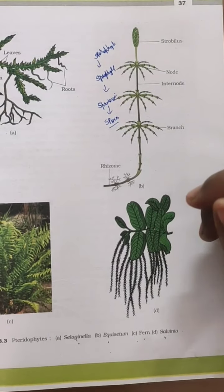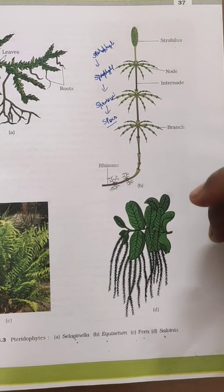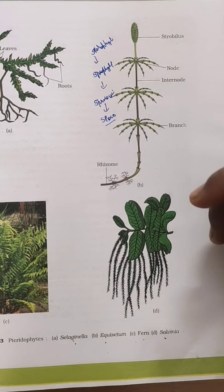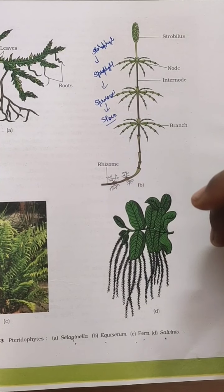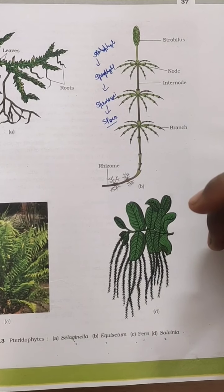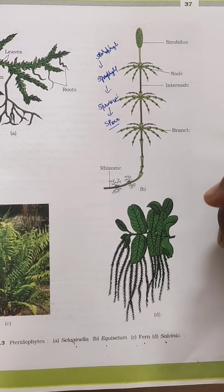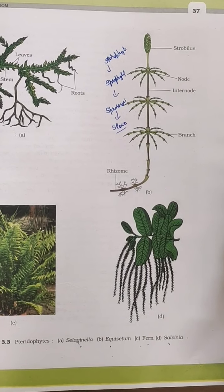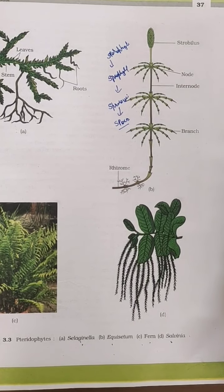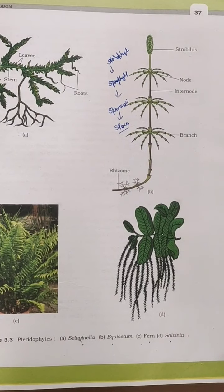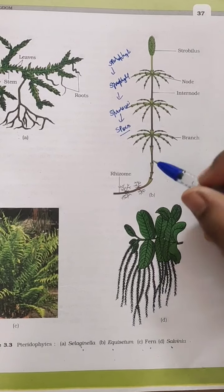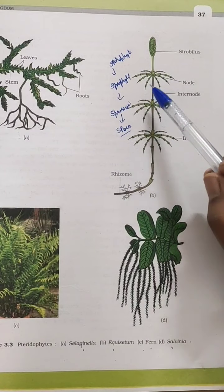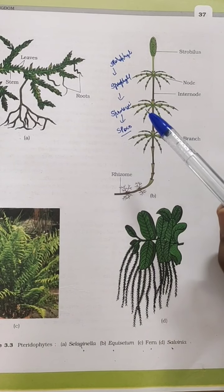So now you understand where the spores are. The sporophyte is the main plant body — the plant which we see. And somewhere inside their body, inside the sporangia, they will have spores. So the structure is clear: the spores are inside the sporangia, and the leaves bearing the sporangia are known as sporophylls.